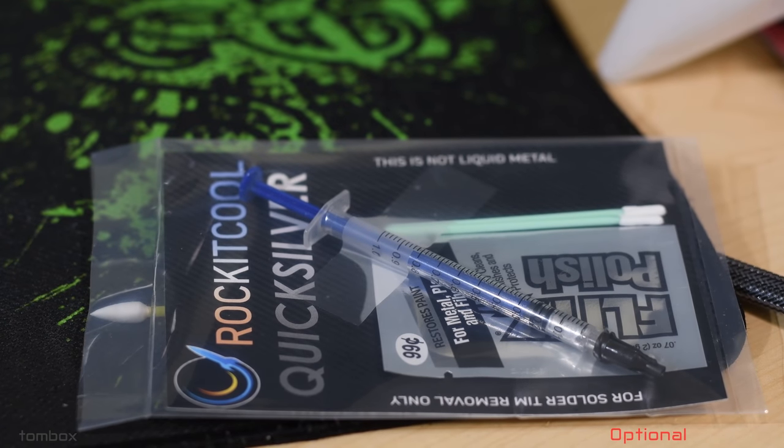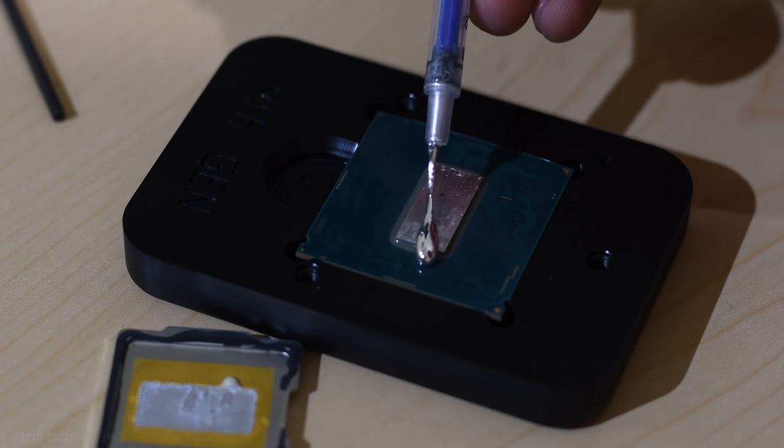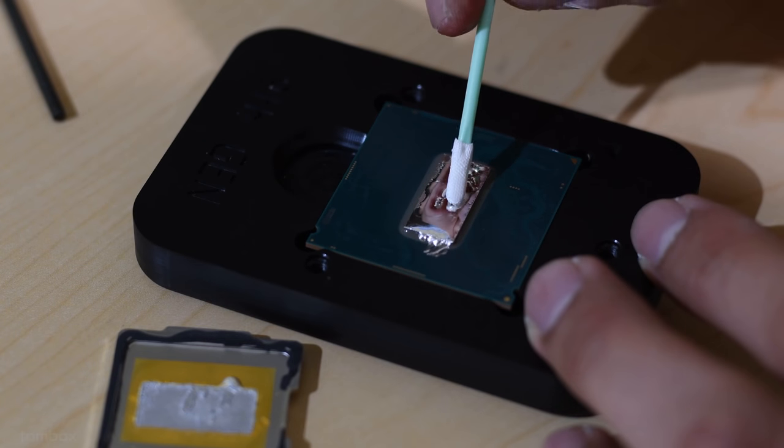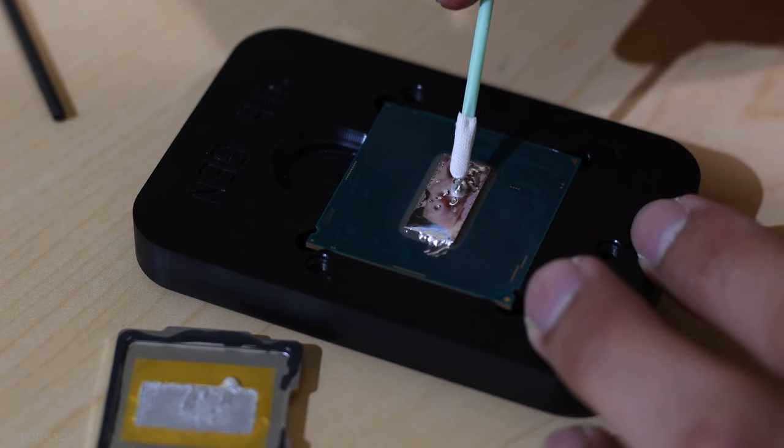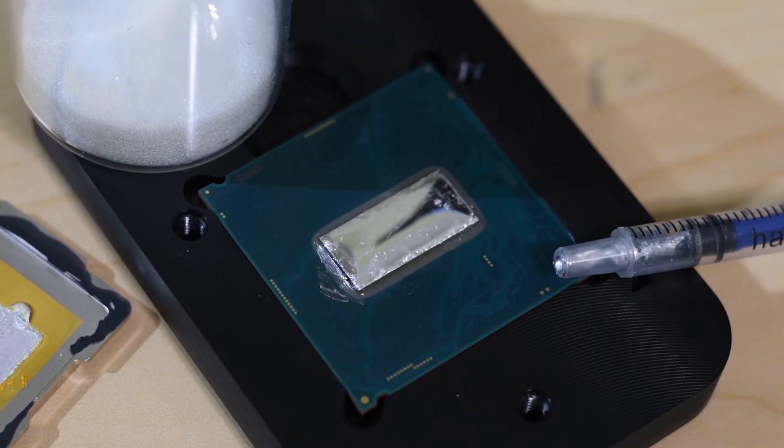I also used Rocket Cool's Quicksilver solder remover, which comes with polish. In total, it's supposed to be left on for 10 minutes.